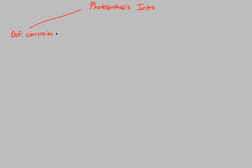Photosynthesis is defined as the conversion of light energy — and big E stands for energy — into chemical bond energy, more specifically chemical bond energy. When we refer to light energy, we're referring to sunlight. Photosynthesis relies on sunlight, and what we do is take that sunlight and its energy and convert it, eventually, into simple sugars.